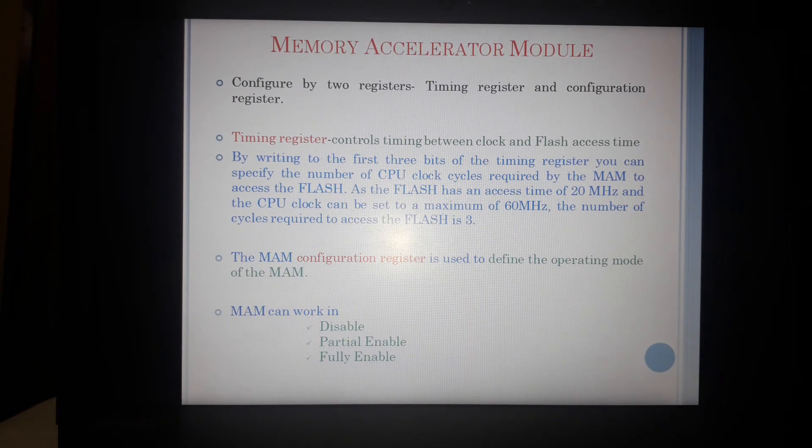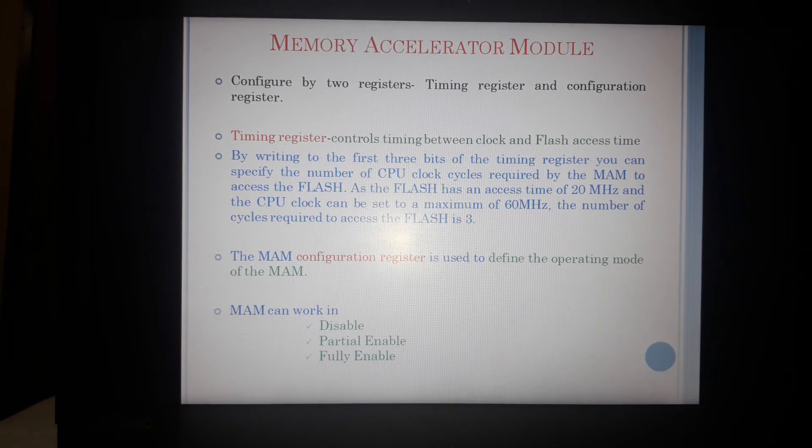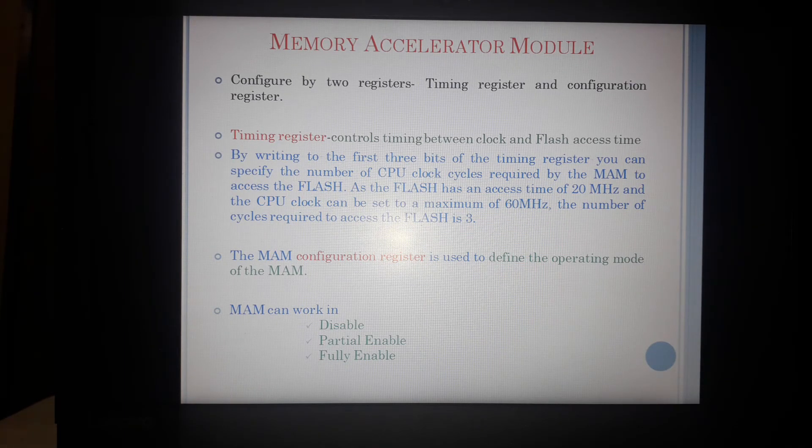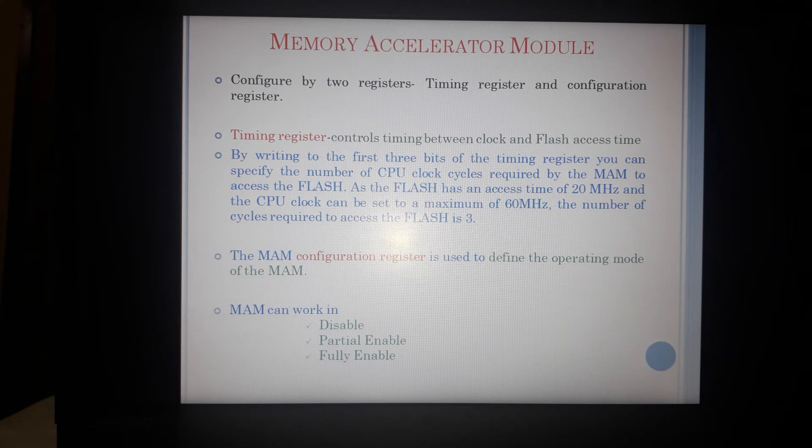Now for configuration of, for working of this memory accelerator module, we need to have certain registers that is timing register and a configuration register. Timing register is nothing but it controls the timing between the clock and the flash access. For example, we were talking about that our processor speed is 80 MHz. And our flash access time is 50 ns is giving me the maximum speed of 20 MHz. So 20 into 4 will give me 80. So I will have to fill in 4 as number of flash cycles required to fill in 1 clock cycle of the processor. So that is being controlled by the timing register.